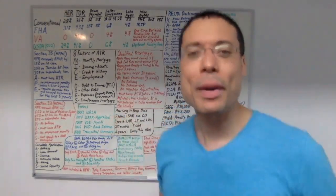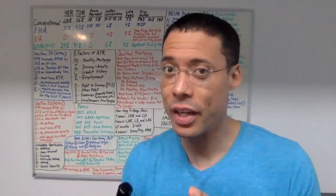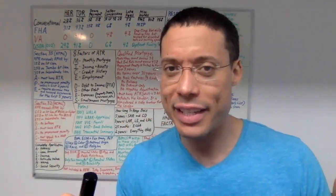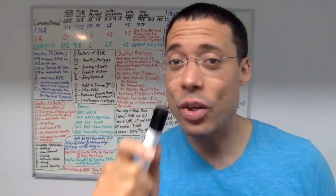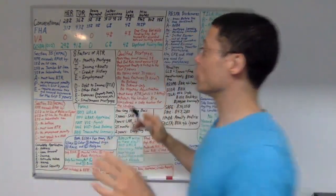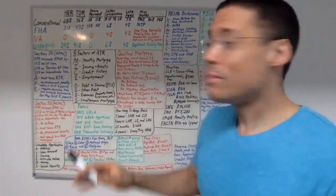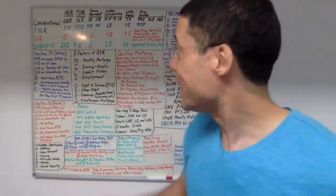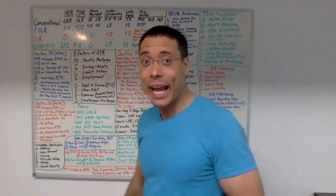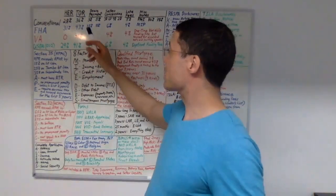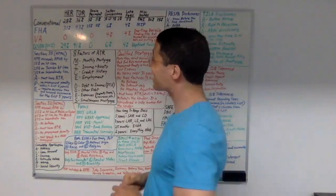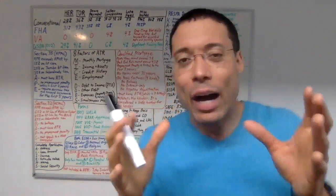On this board, we're talking about some key notes for the MLO test. What are some general characteristics of conventional loans? In general, the maximum housing expense ratio for a conventional loan is 28%. And in general, the maximum total obligations ratio for a conventional loan is 36%.